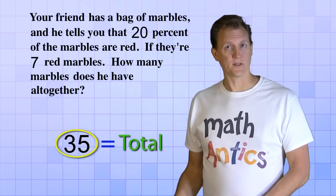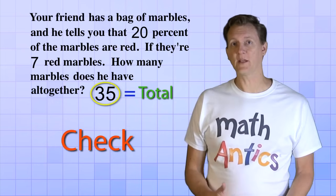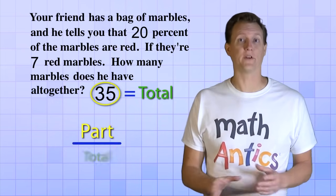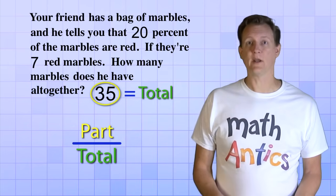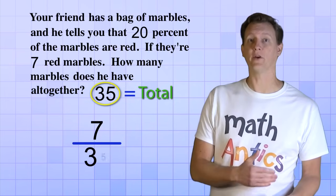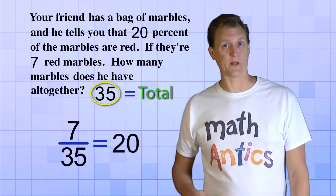And in a problem like this, you can always check your answer by making sure that the fraction of the part over the total would give you the correct percent. For example, in this case, you can make sure that the fraction 7 over 35 would really be 20 percent.